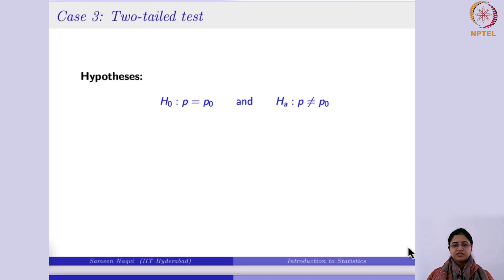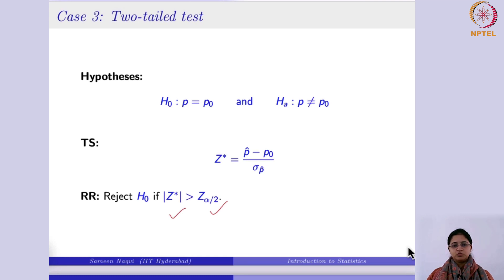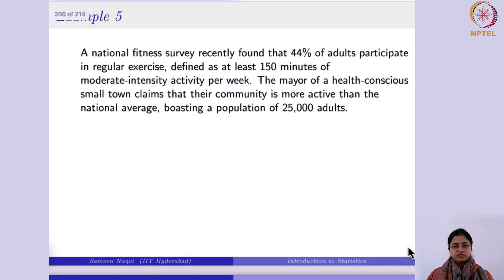For the two-tailed proportion test, the test statistic remains the same. Since it is two-tailed, there are rejection regions on both extremes. You compare the absolute value of z* with z_(alpha/2), because alpha is split equally into two halves on either side of the distribution.